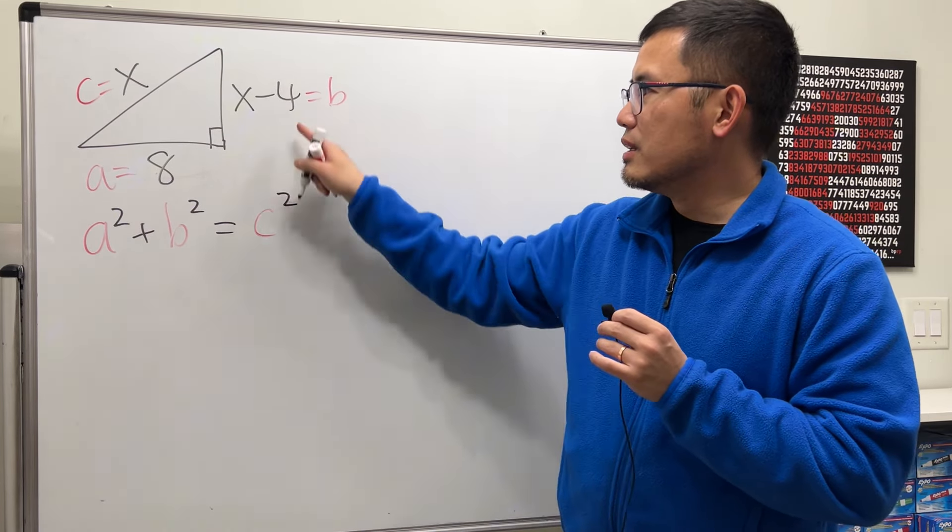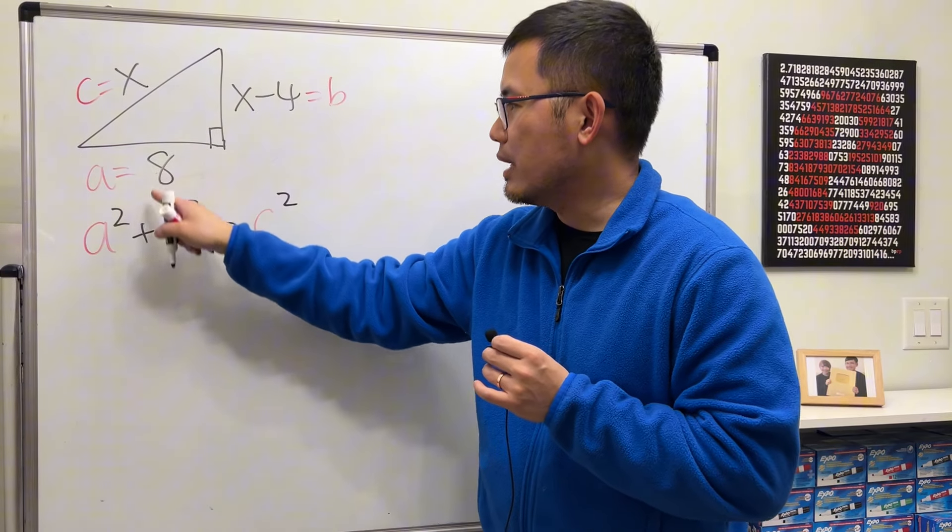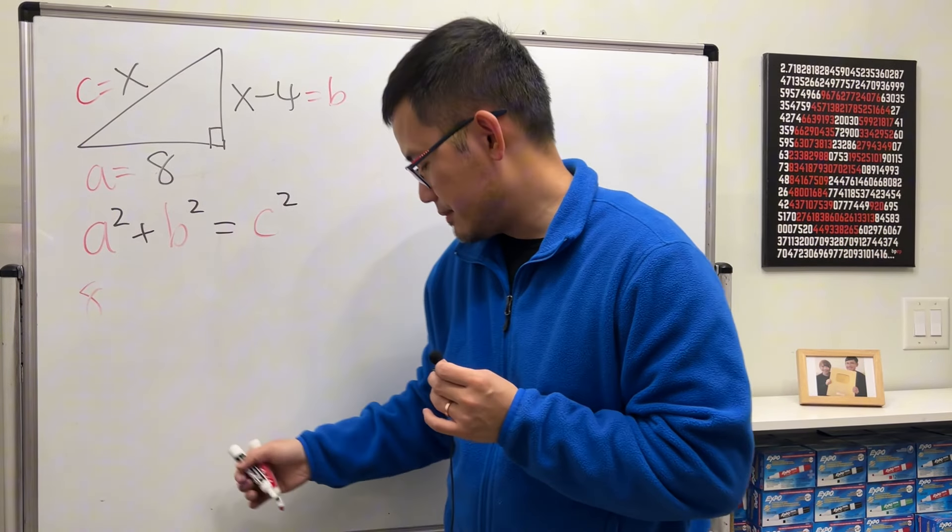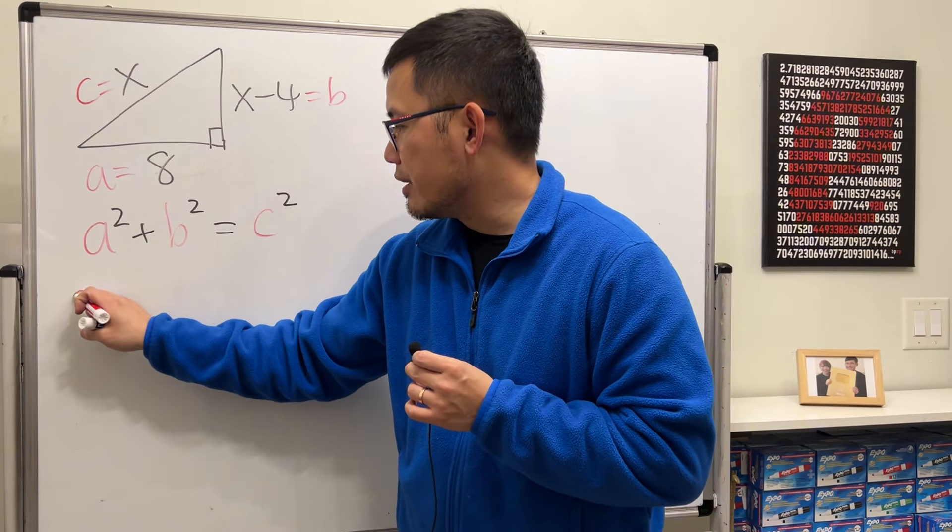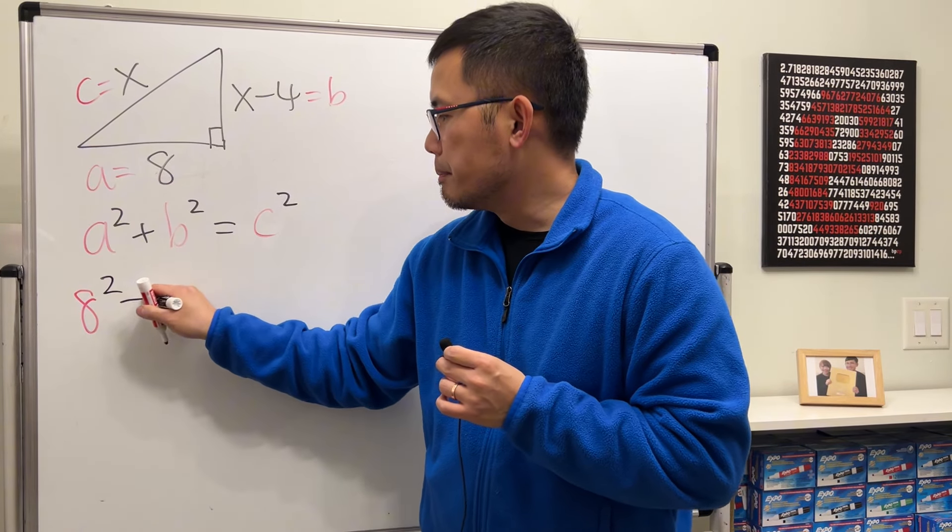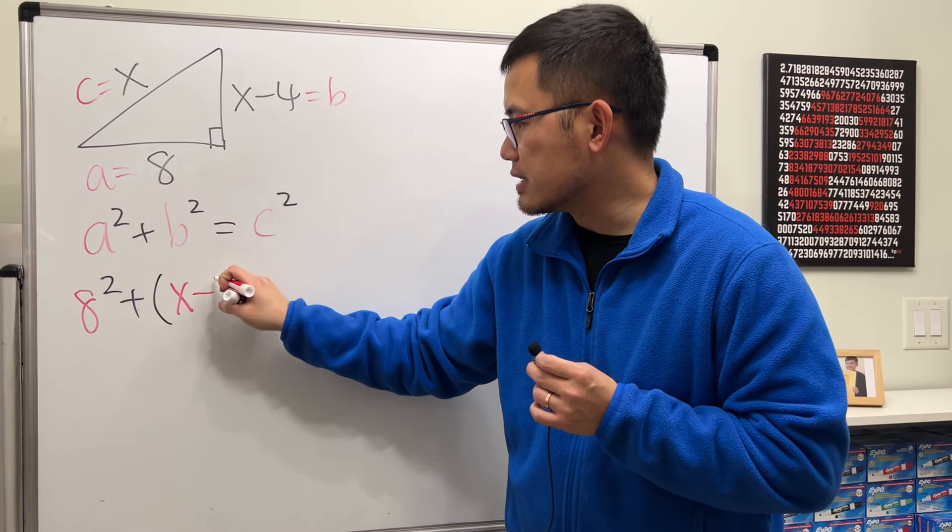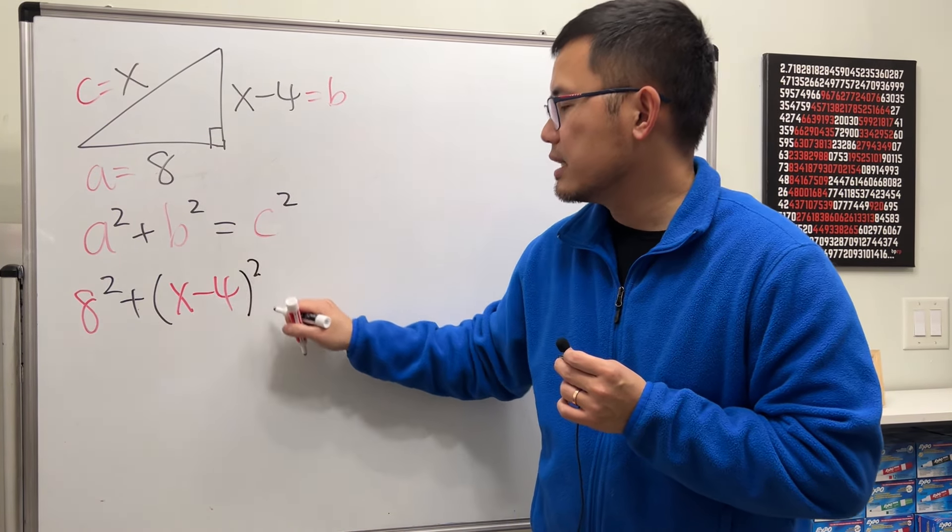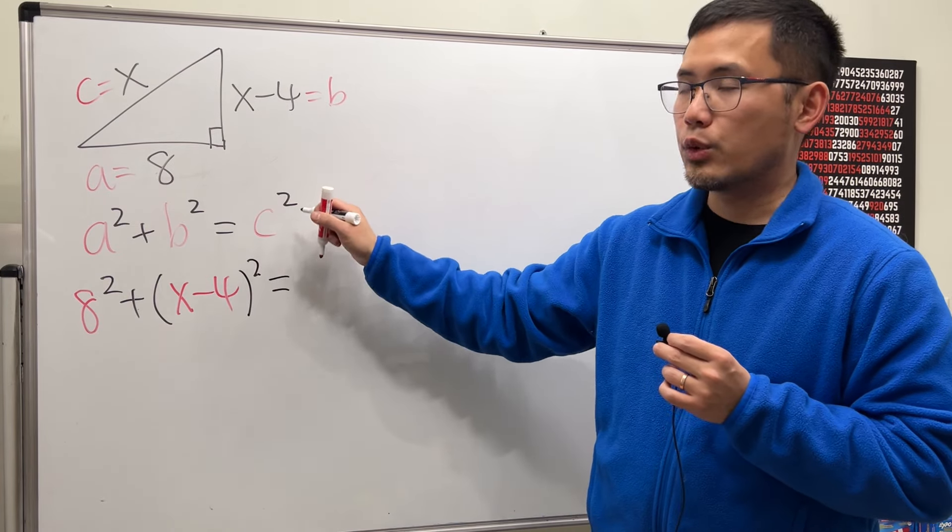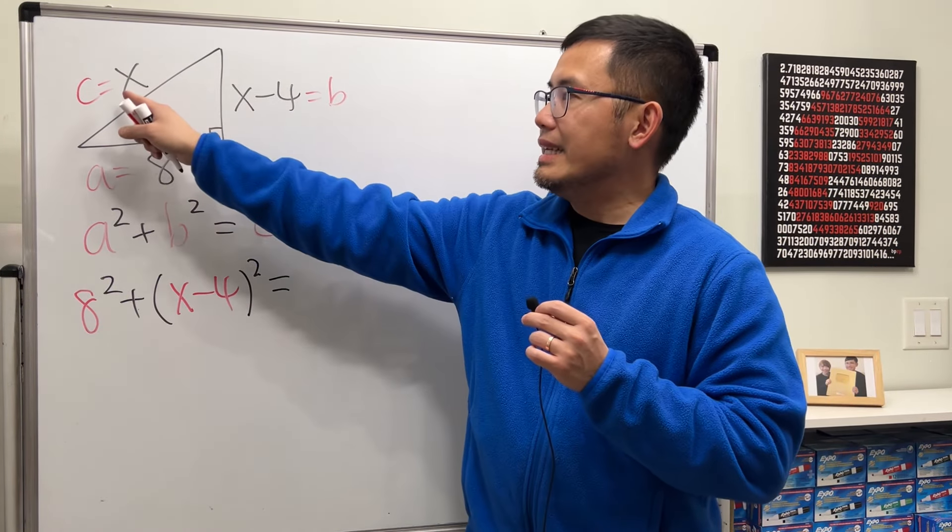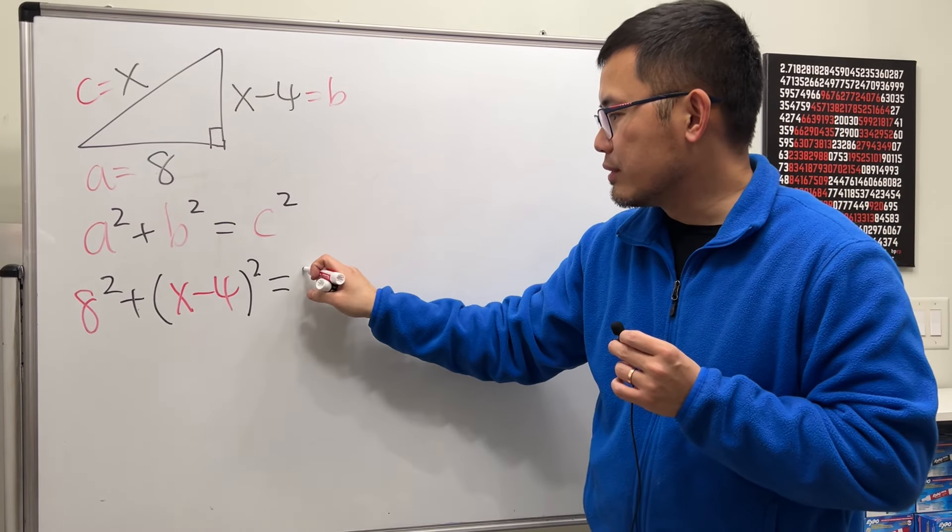And now I'm just doing everything. So b is this, a is this, so put on 8. Put on 8 right here, so we have 8-squared plus b is x minus 4. So parentheses, x minus 4. And then square that, and that is equal to c-squared. c is equal to x. So we have to have x right here.